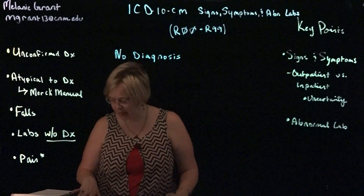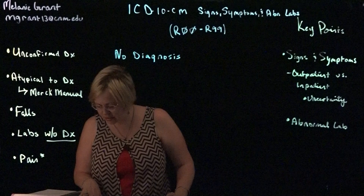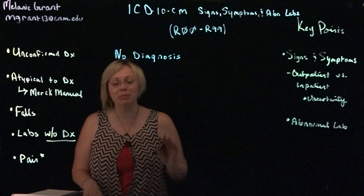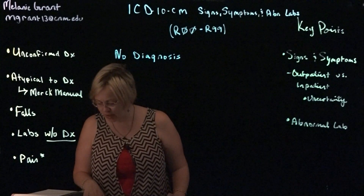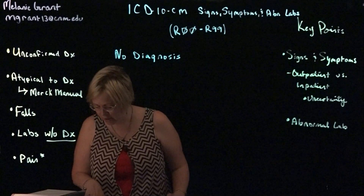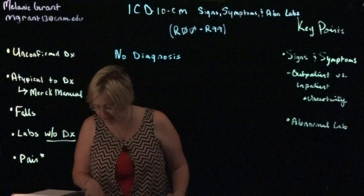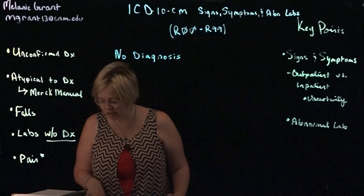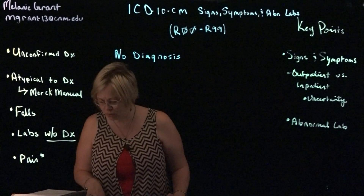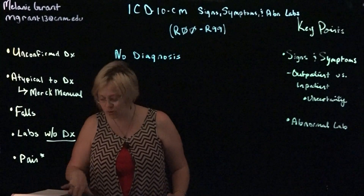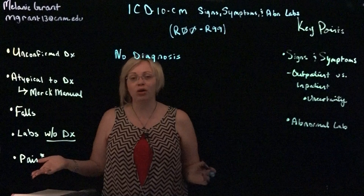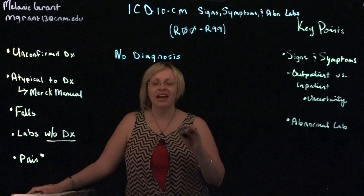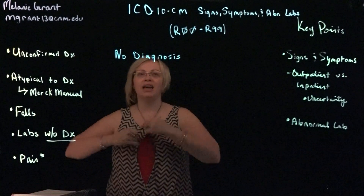Signs and symptoms that point definitively to a given diagnosis are assigned to a category in other chapters of classification. In general, categories in this chapter include the less well-defined conditions and symptoms that, without necessary study of the case to establish a final diagnosis, point perhaps equally to two or more diseases or two or more systems of the body.